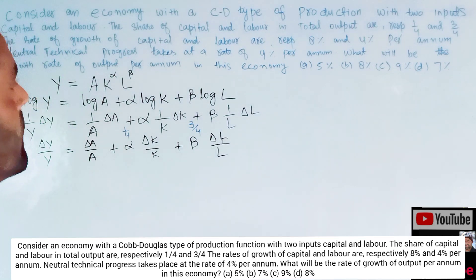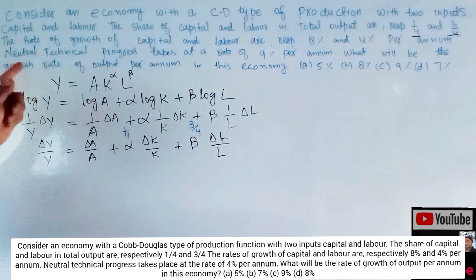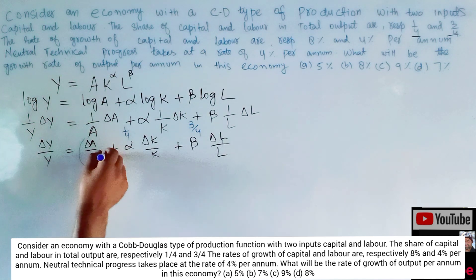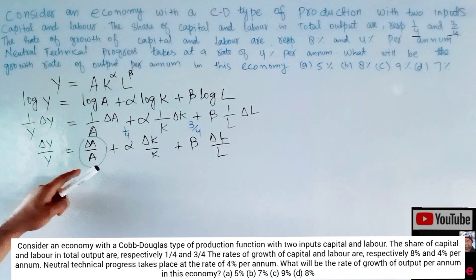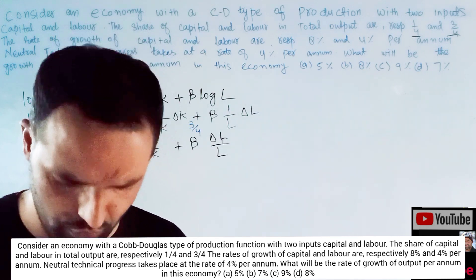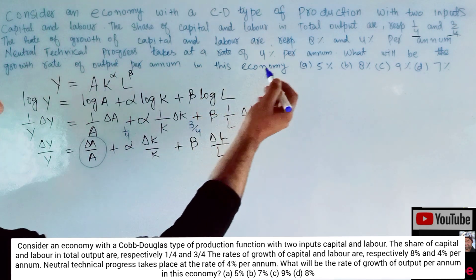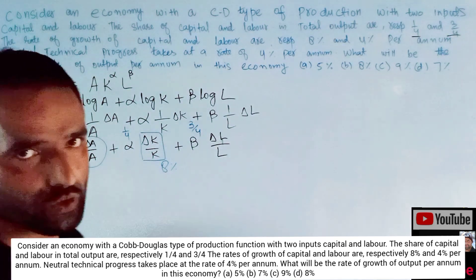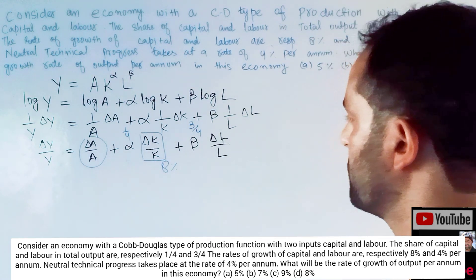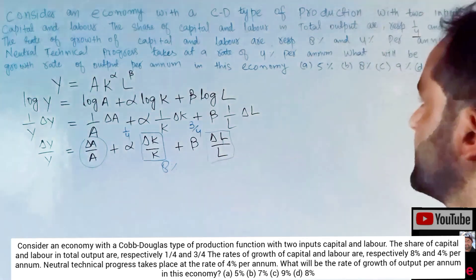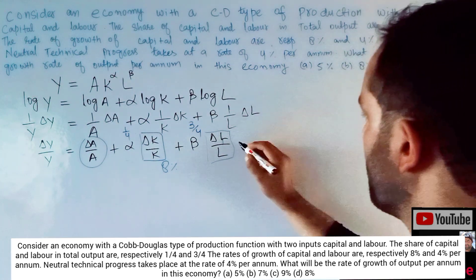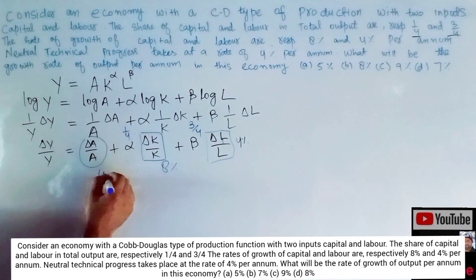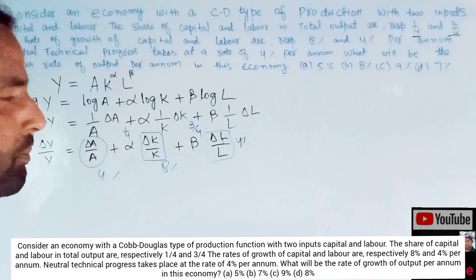We just need to plug in what we are given. Alpha equals 1/4 and beta equals 3/4. The growth rate of capital, dK/K, is 8%. The growth rate of labor, dL/L, is 4%. The growth rate of neutral technical progress, dA/A, is 4% per annum.